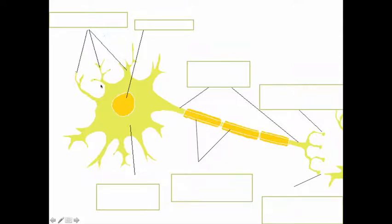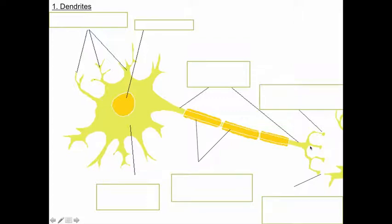So these short branches here — first we're going to identify the names of these parts, and then we're going to look at their functions, what they actually do. Here is the main part of the neuron, and then you have these short branches and a really long branch coming off. These short branches are called dendrites. Only the shorter branches are called dendrites — the long branch coming off is not a dendrite.